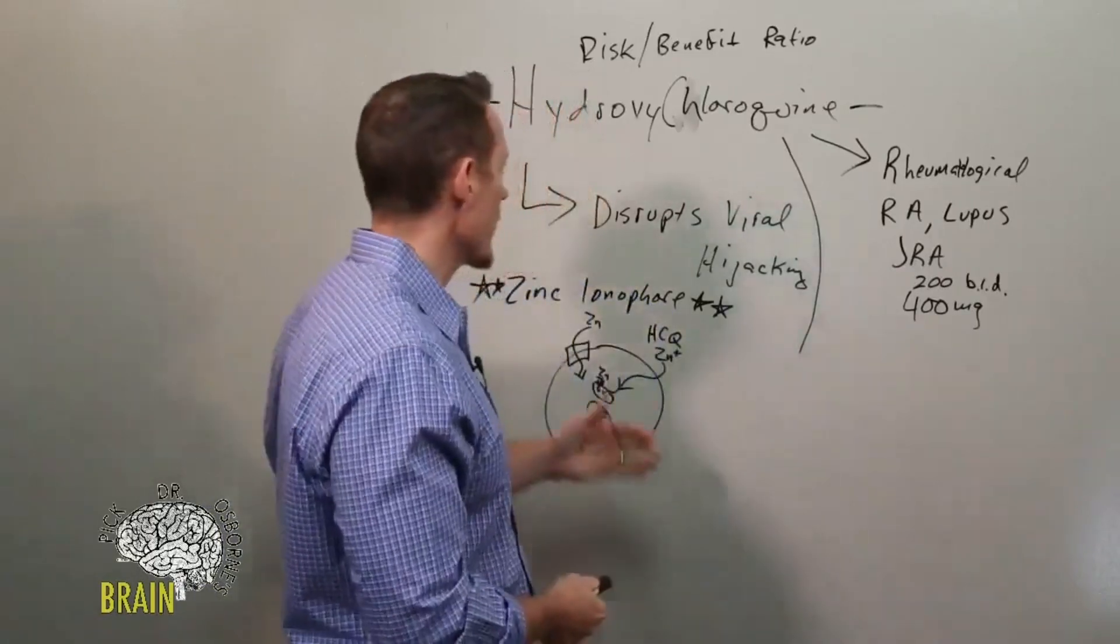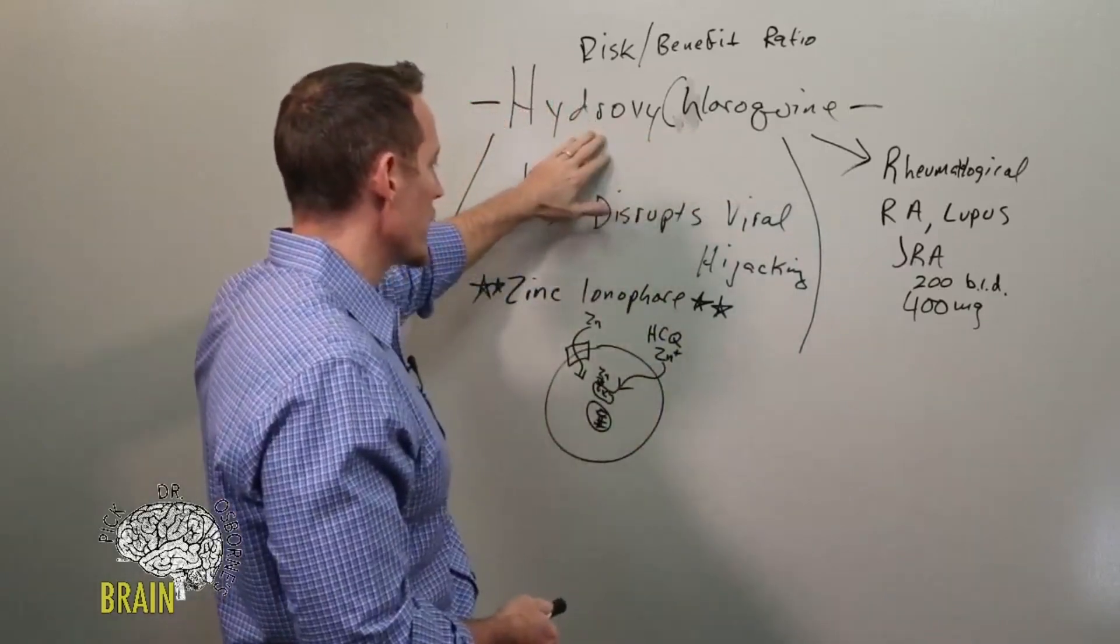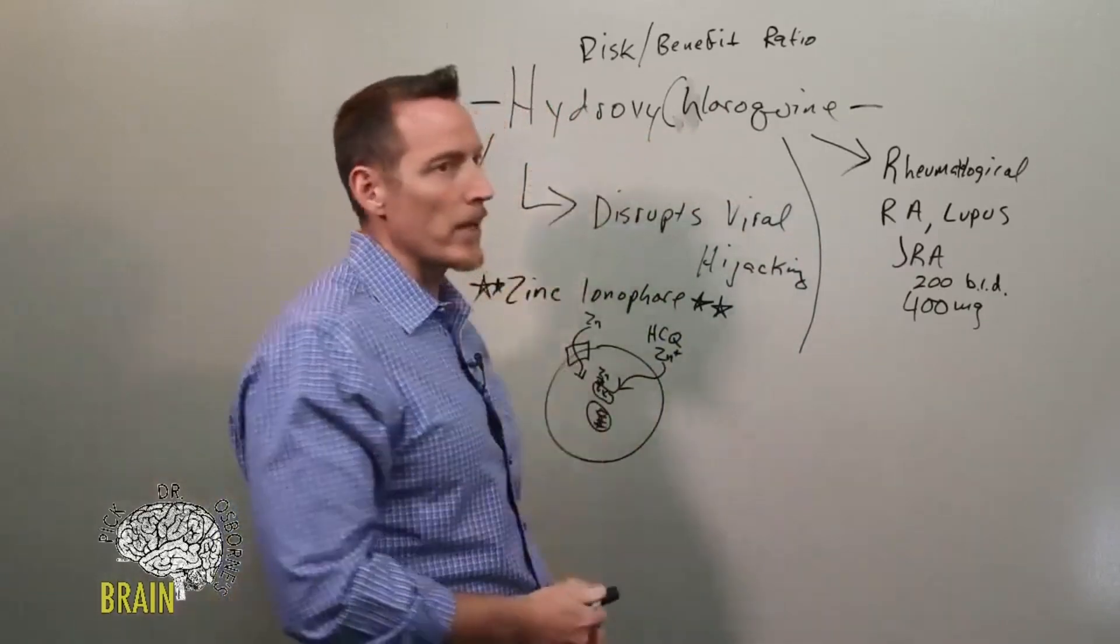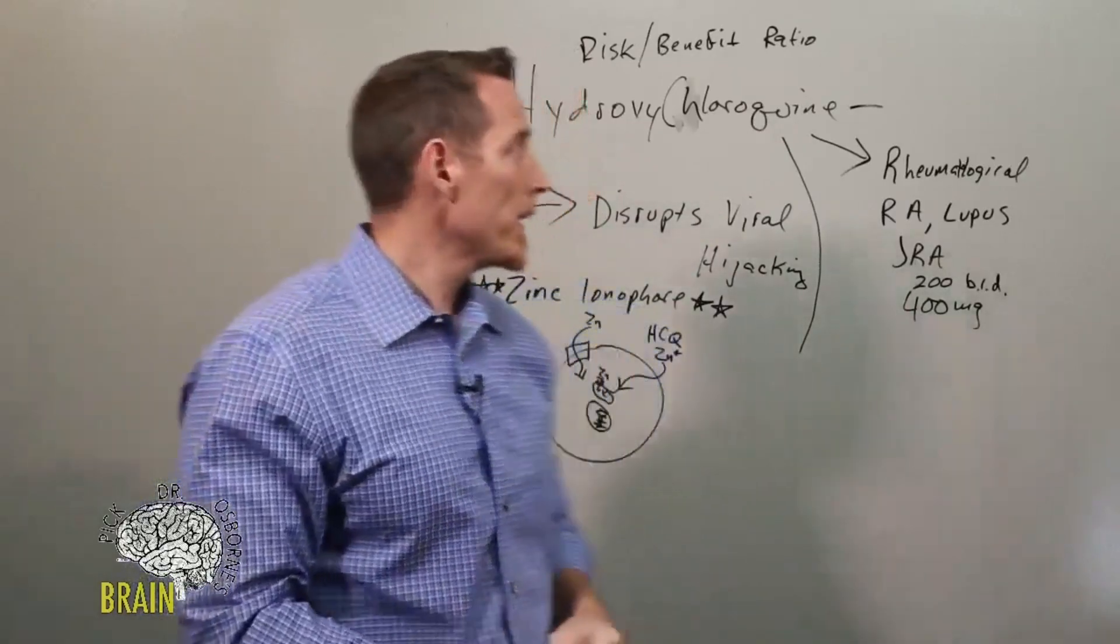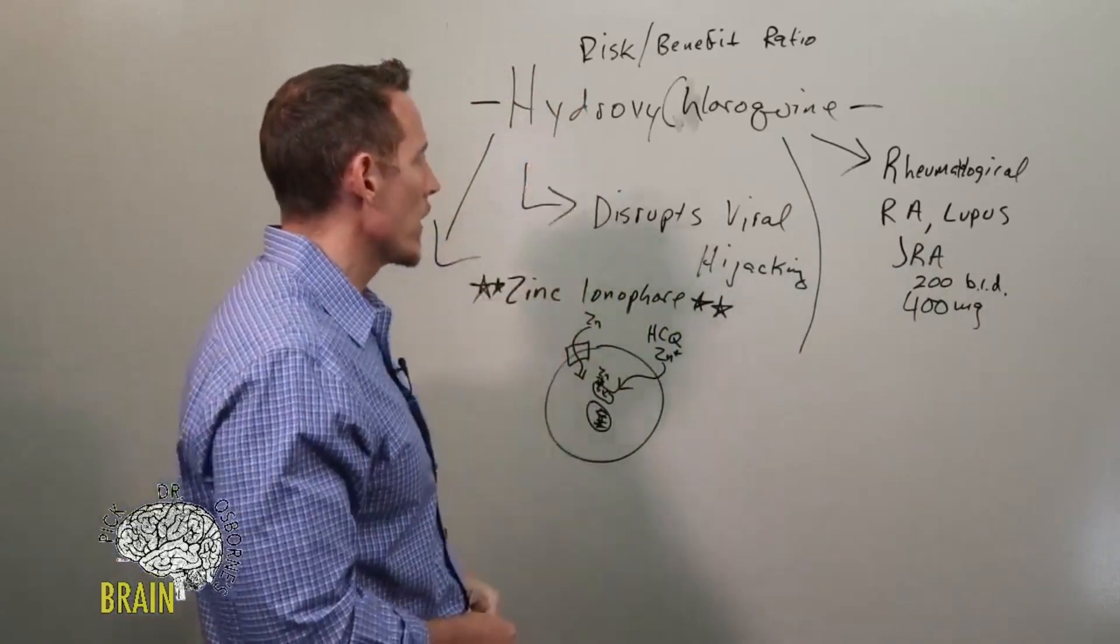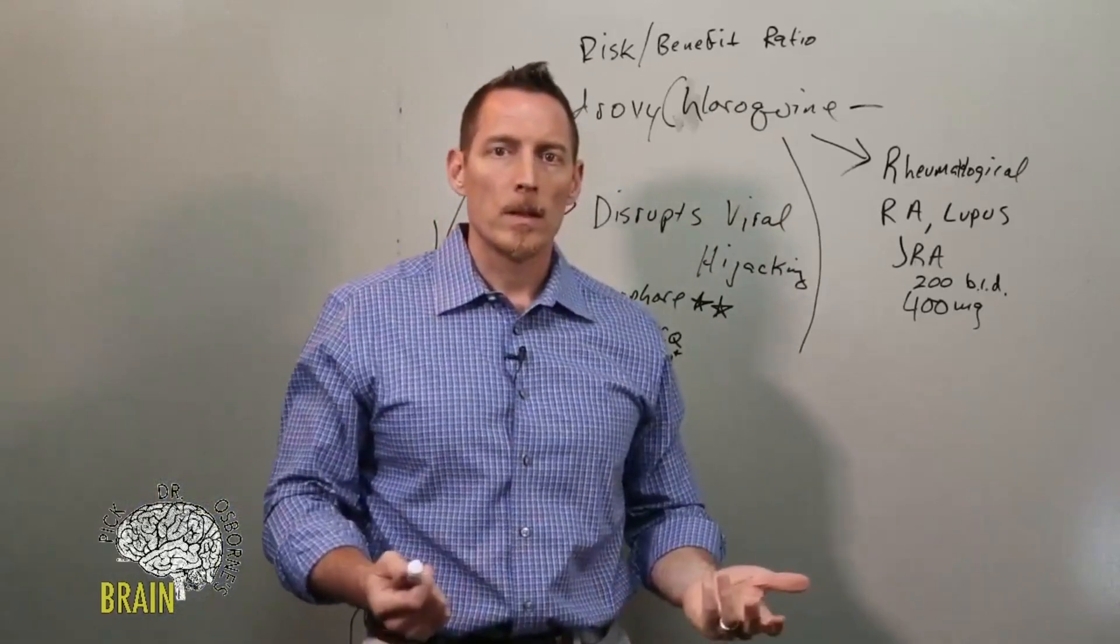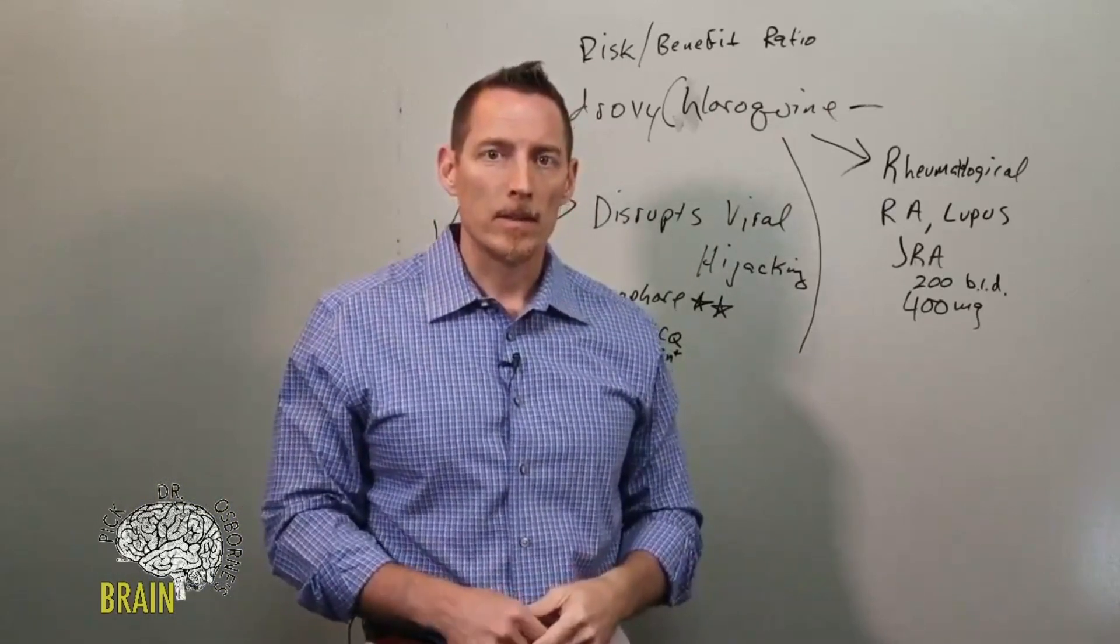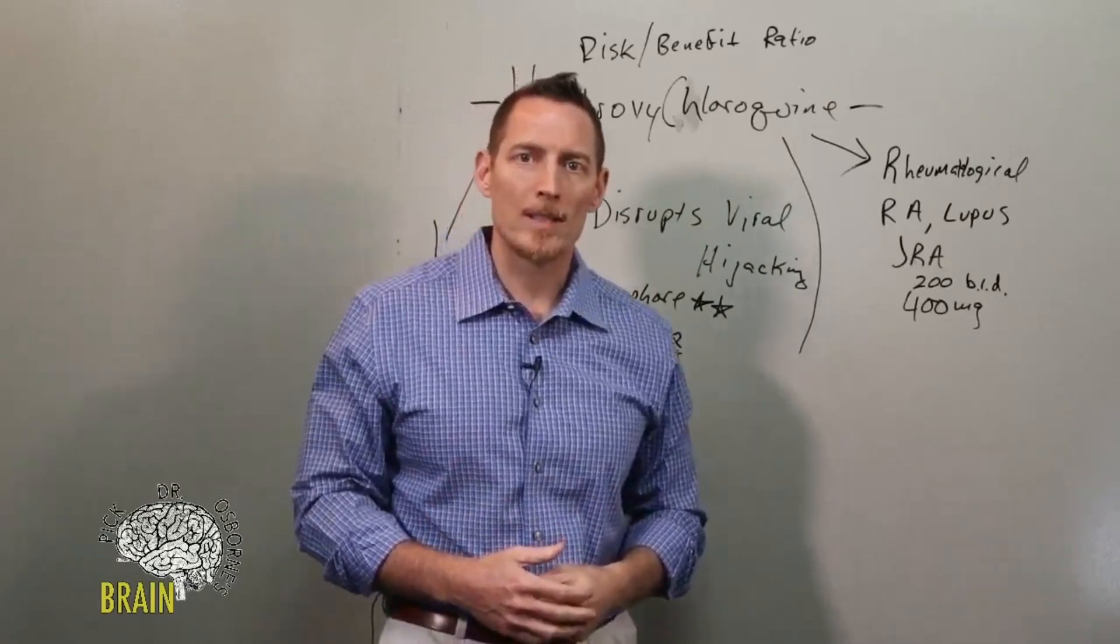I said earlier that the mechanism of action here was that these medicines potentially get zinc to the areas where zinc can then work its magic. So the next logical question would be, if hydroxychloroquine and chloroquine have known toxicity effects, what can we do that isn't going to create a toxicity effect that might also improve zinc having access into the cell?